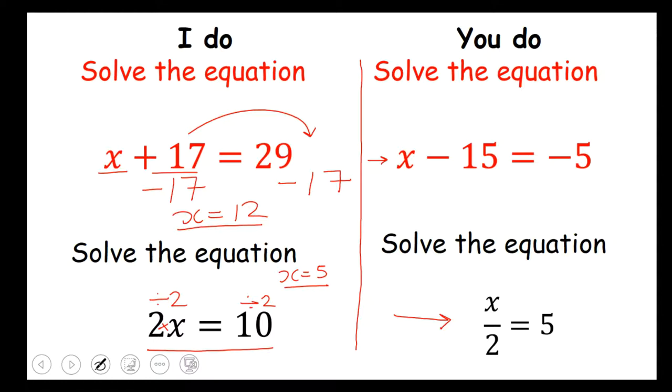Okay this is the answer that you should have got for these questions. So the first one is x minus 15 equals minus 5. So we need to add 15 to both sides. And the answer that we should get is x equals 10. And the last one.